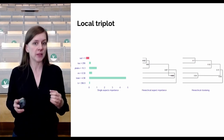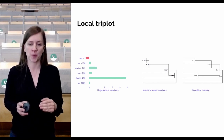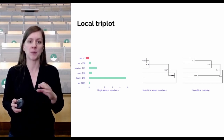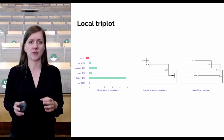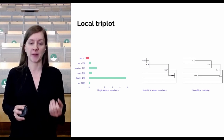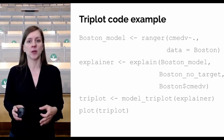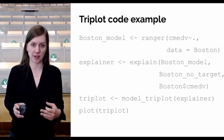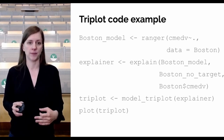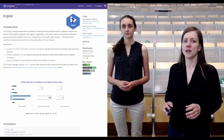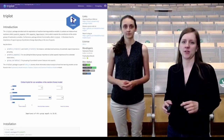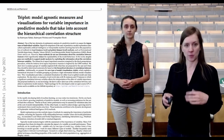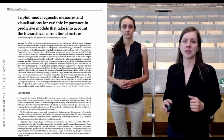Triplot also provides a chart for local variable importance, addressing how single variables and groups influence prediction for a given observation. It's based on an experimental method called Predict Aspects, also implemented in the package. In the code example, after building the model you create a Dalek explainer — a useful adapter for machine learning explanations — then build the Triplot object on the explainer and plot it. The Triplot package is available on CRAN, with more information in a preprint paper and on GitHub.